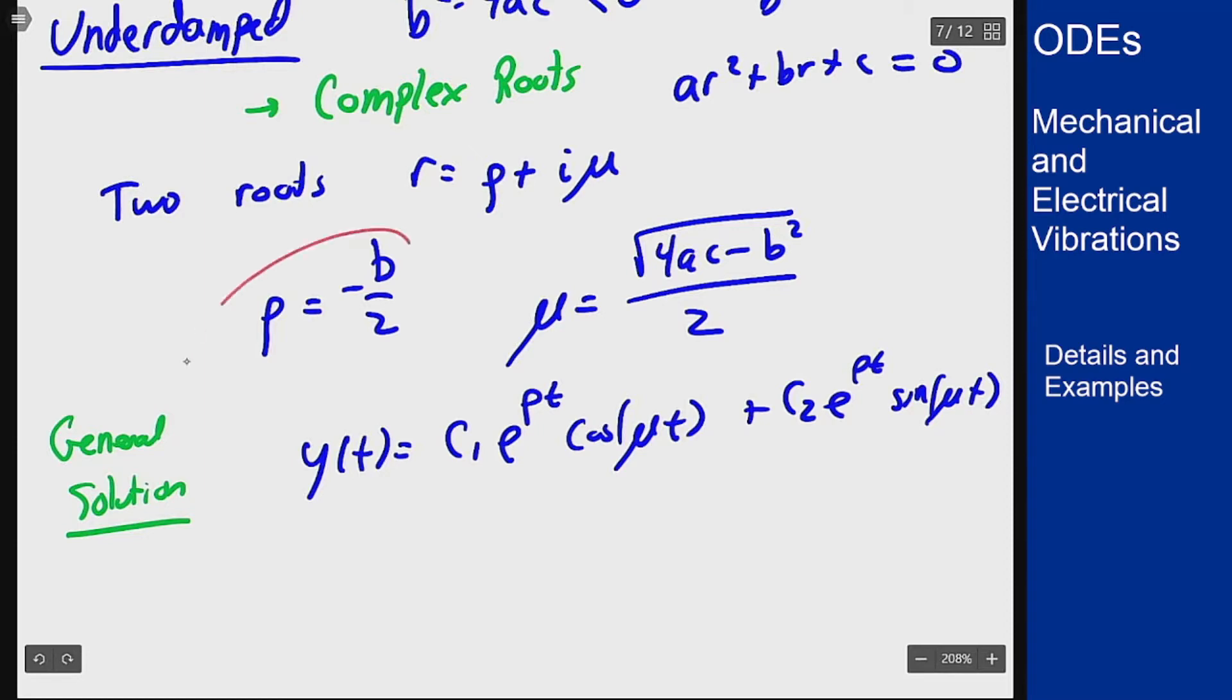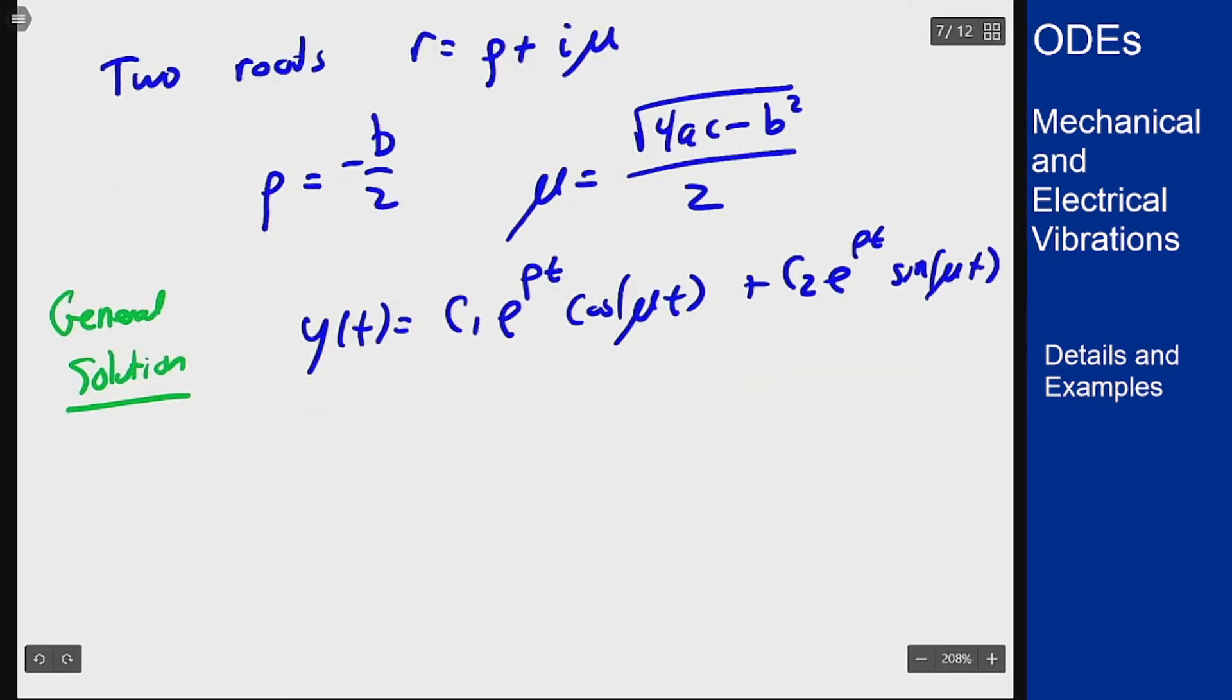Now keep in mind here ρ is always negative because b is always positive, therefore these will both decay as t gets big. Both of these simultaneously will get smaller so the whole solution is going to go to zero eventually. So this will decay in time but it will oscillate on its way down because of sine and cosine terms.